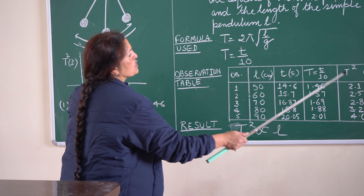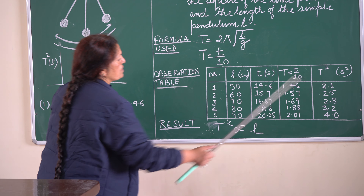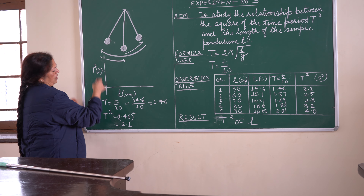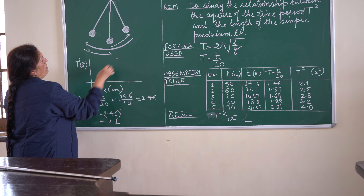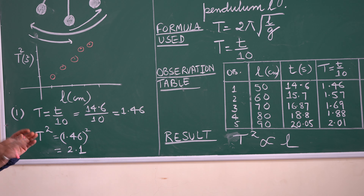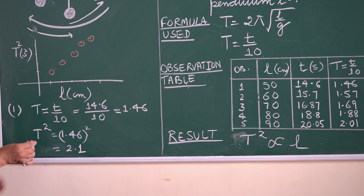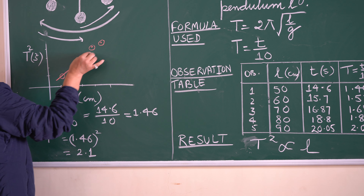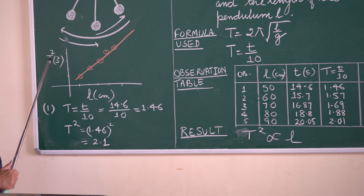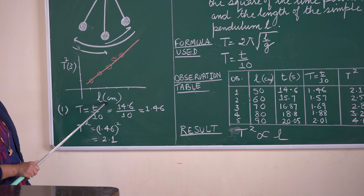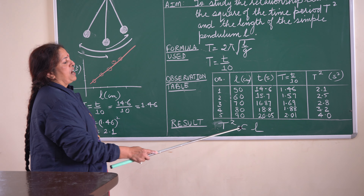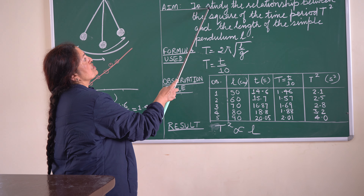Length goes on one axis and square of the time period on the other. I will keep on taking readings from the observation table and plotting them. While plotting, I can get 5 points. I have to join the best 3 points to make a straight line. Joining those 3 points in a straight line, the result is that time period squared is directly proportional to the length of the simple pendulum. This result I will write in statement form: the square of the time period is directly proportional to the length of the simple pendulum. That is the basic relationship we wanted to find.